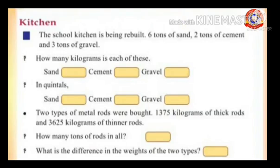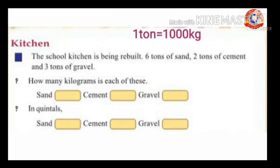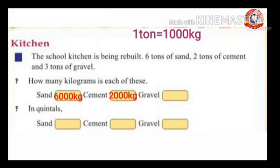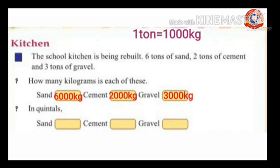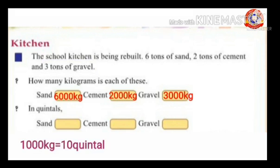Next question — Kitchen: the school kitchen is being rebuilt using 6 tons of sand, 2 tons of cement, and 3 tons of gravel. How many kilograms is each? 1 ton equals 1000 kg, so 6 tons of sand = 6000 kg, 2 tons of cement = 2000 kg, 3 tons of gravel = 3000 kg. In quintals: 6000 kg = 60 quintals, 2000 kg = 20 quintals, 3000 kg = 30 quintals.